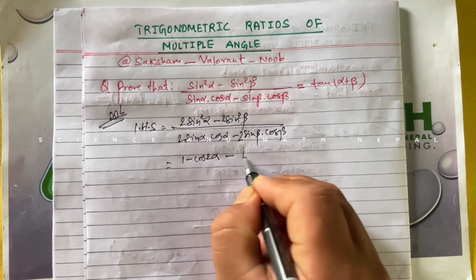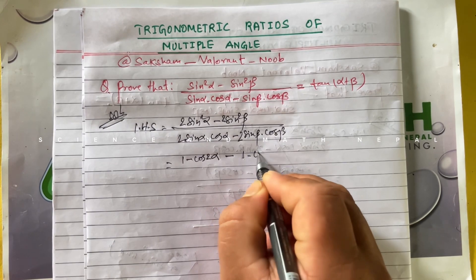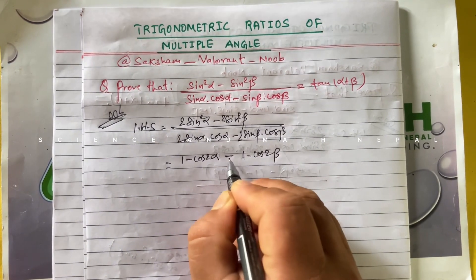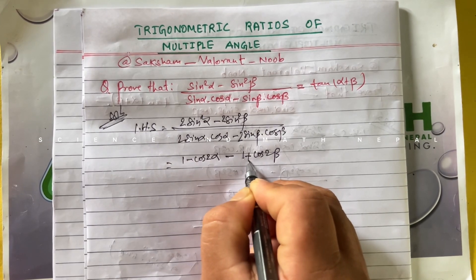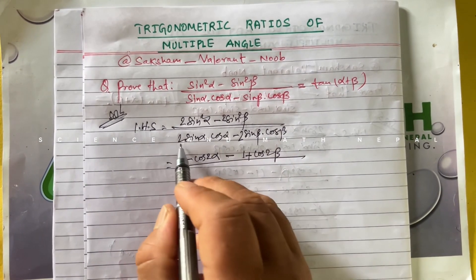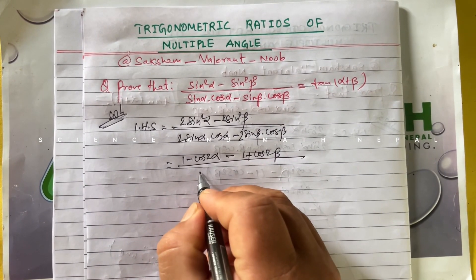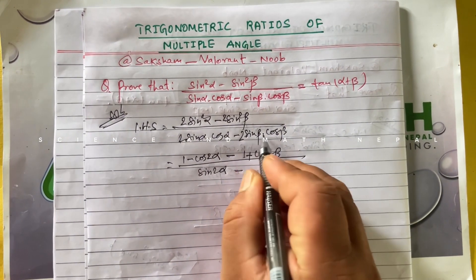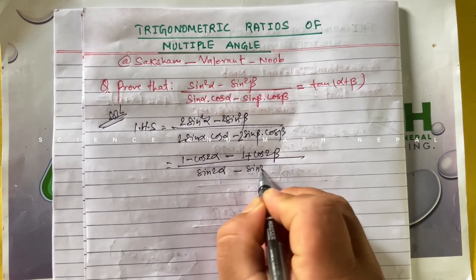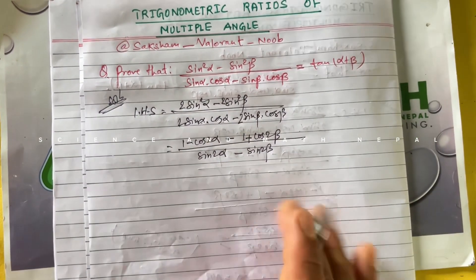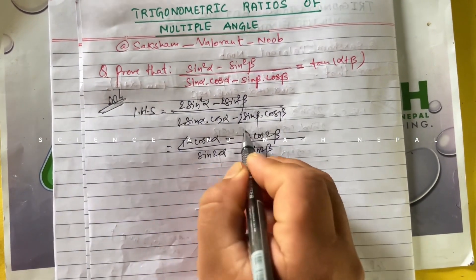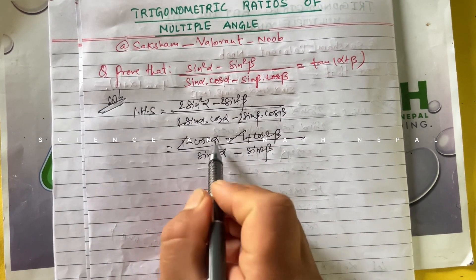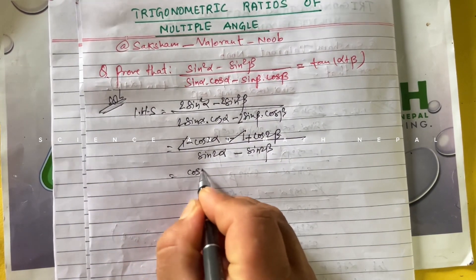In the denominator, 2sinα cosα becomes sin2α, and 2sinβ cosβ becomes sin2β. After cancellation, the 1 and -1 cancel, so the numerator becomes cos2β - cos2α, and the denominator is sin2α - sin2β.